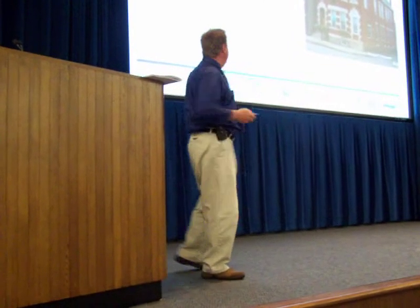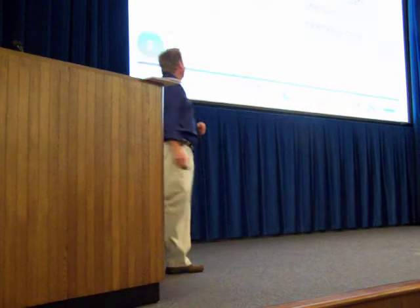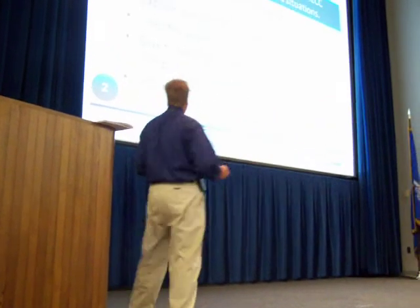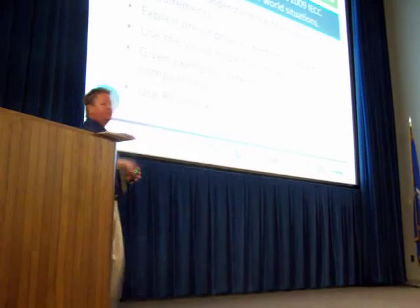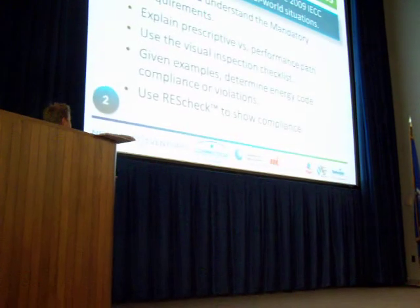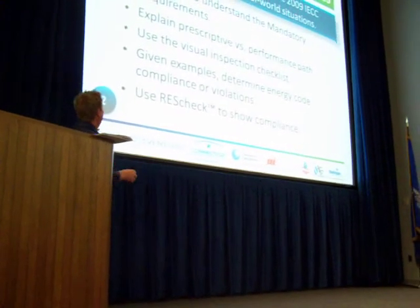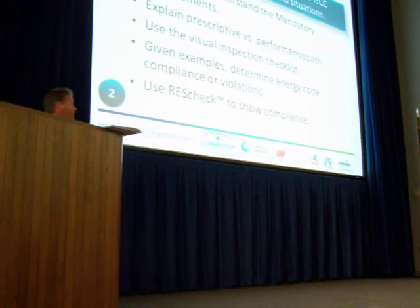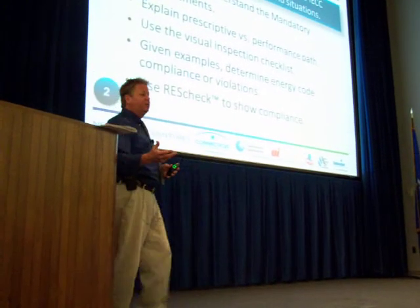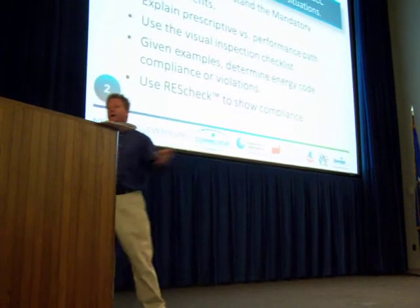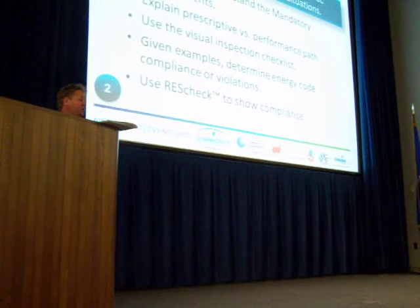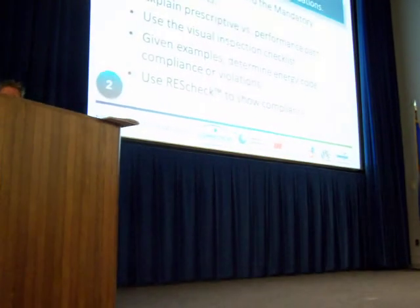Today we're going to get a good understanding of the 2009 IECC with respect to the residential chapter, chapter 4. We're going to identify what the mandatory requirements are, and I'm going to explain the difference between the performance path and the prescriptive path as ways to comply with the energy code.